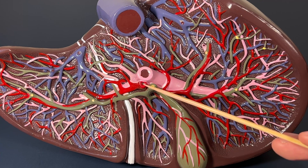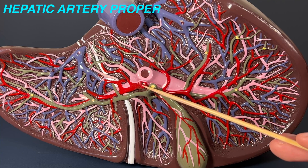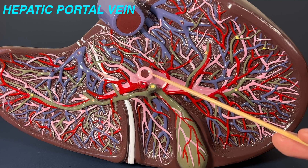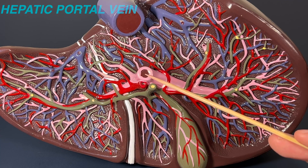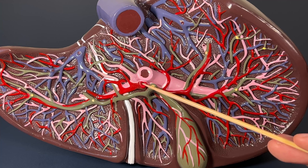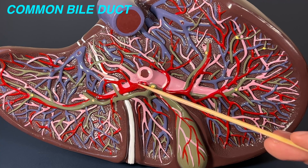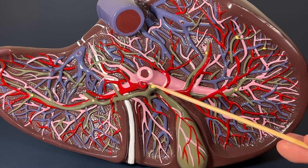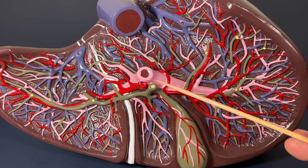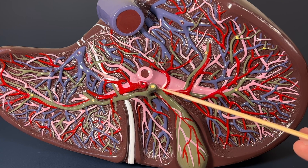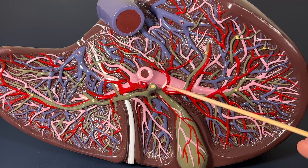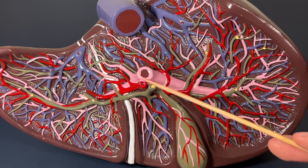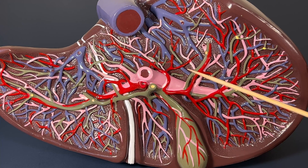This structure in bright red is the hepatic artery proper. In the pinkish color, this is the hepatic portal vein. Collectively, the hepatic portal vein, the hepatic artery proper, and the common bile duct — these three structures make up the porta hepatis. Porta hepatis is Latin for 'the door of the liver': porta means door, and hepatis refers to the liver. These three structures are the entry to the liver.